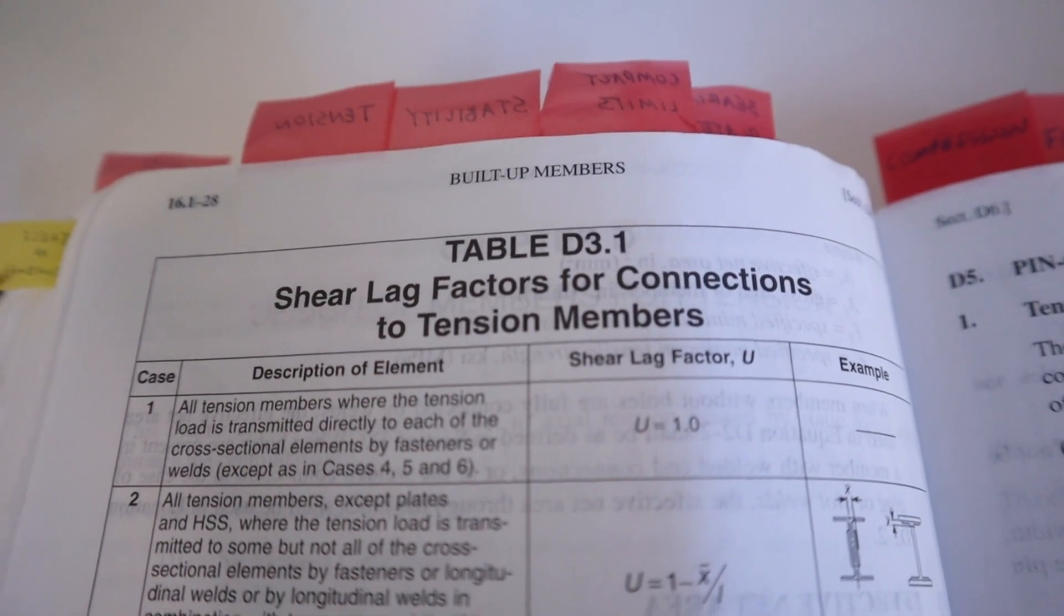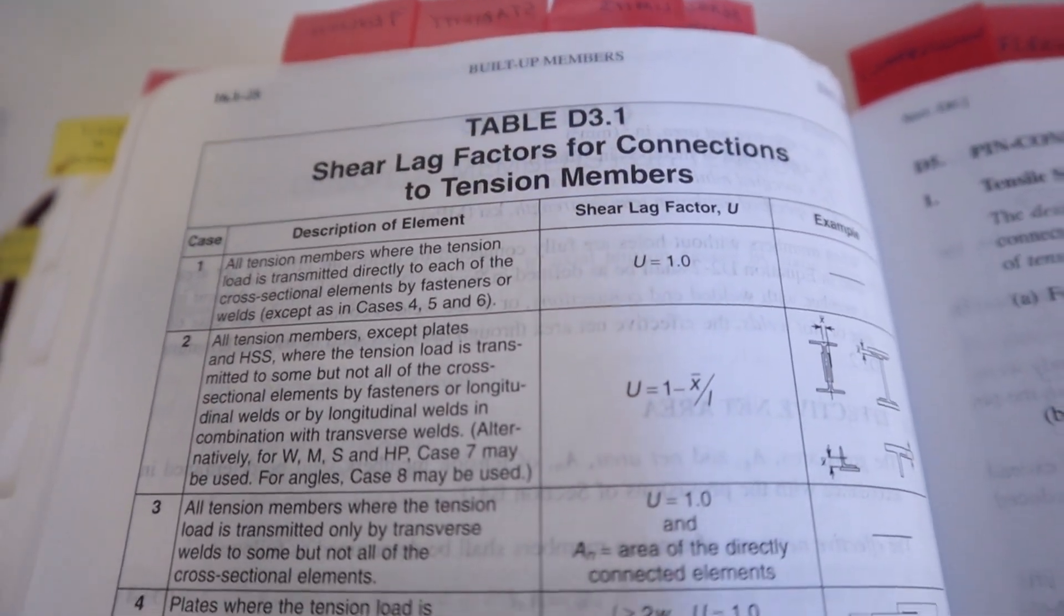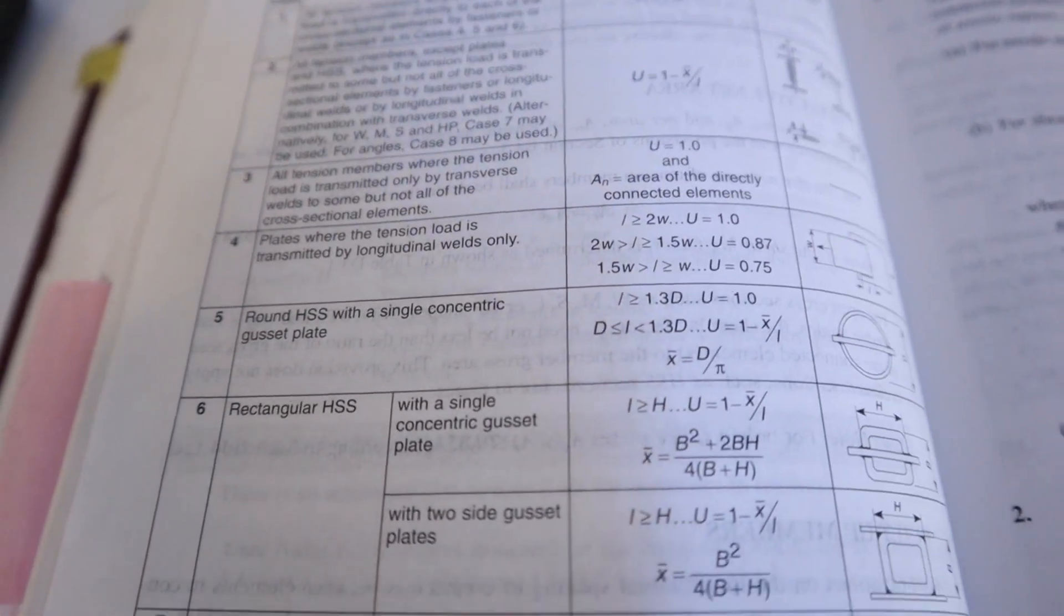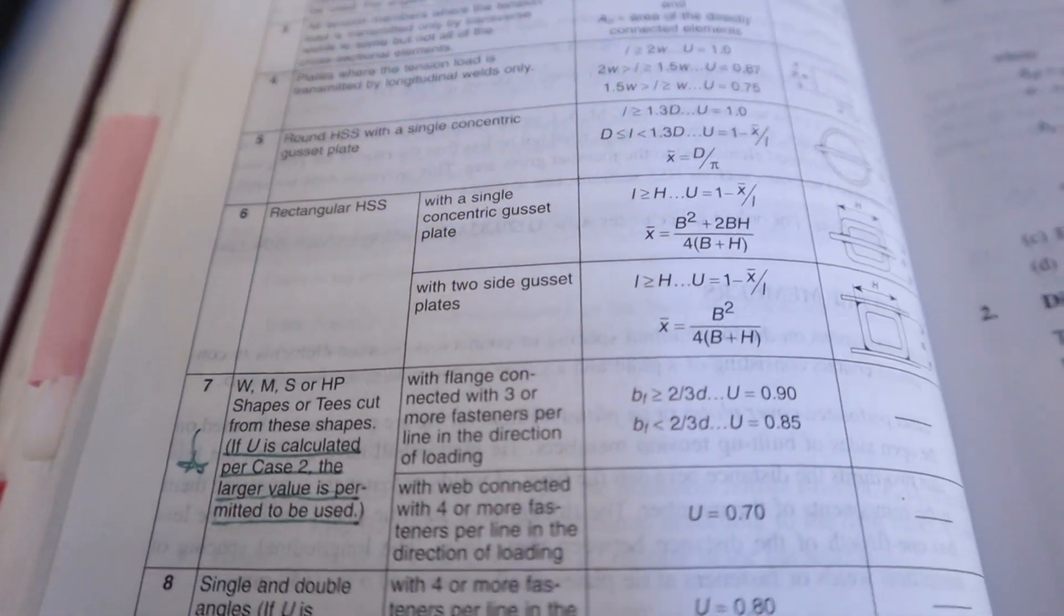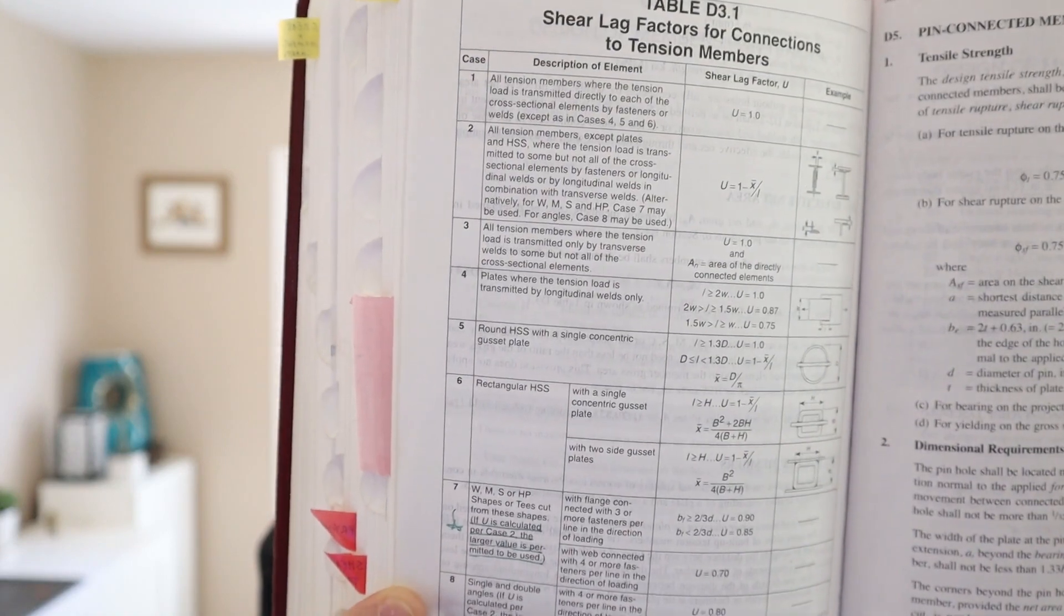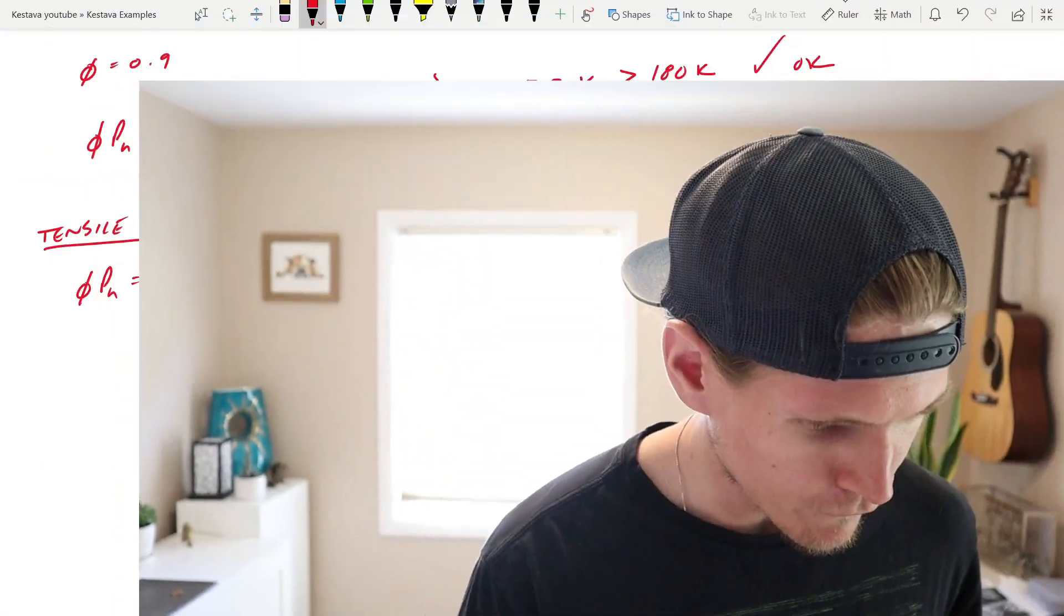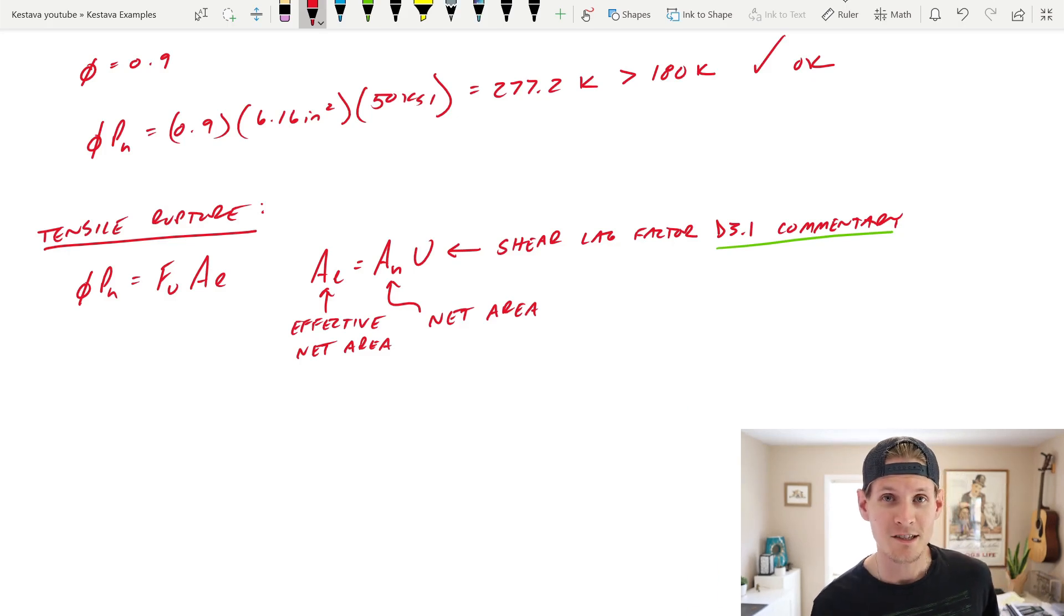All right, let's jump back to chapter D, not the commentary, and let's continue solving this puppy. So we need to find the effective net area. That also means we need to find A sub n, the net area, and u, our shear lag factor. Let's start with our shear lag factor. So if we flip to the next page, boom, this is 16.1-28. Here you have this table, and this provides numerous different cases, all listed on the side there, one through like 12 or something, and it's based upon the type of section and connection that you have in tension.